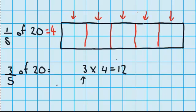I got this 3 because I was interested in 3 pieces. That's what my numerator told me. And I got this 4 because that's how many squares are in each of the fifths. So 3 times 4 is 12. So the answer to 3 fifths of 20 is 12.